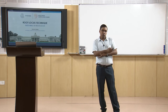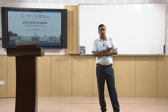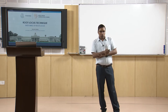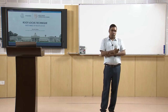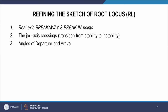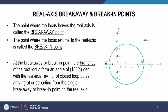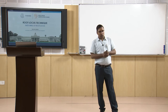Today we will discuss a few more rules to refine the root locus further. First, we will discuss breakaway and break-in points, and then j-omega axis crossings. The point where the locus leaves the real axis is called the breakaway point, and the point where the locus returns to the real axis is called the break-in point.